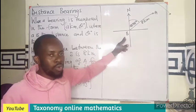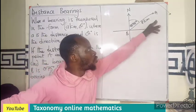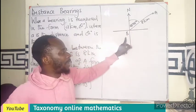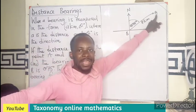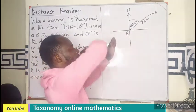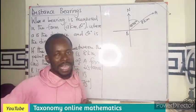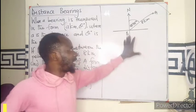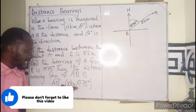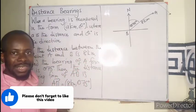For example, if we have Boku and Accra, the distance between Accra and Boku is 8 kilometers. The bearing of A from B means you go to the north of B and measure until you meet the line joining the two points, which gives 75 degrees. So this is translated into that distance bearing form, and this form can also be translated back.